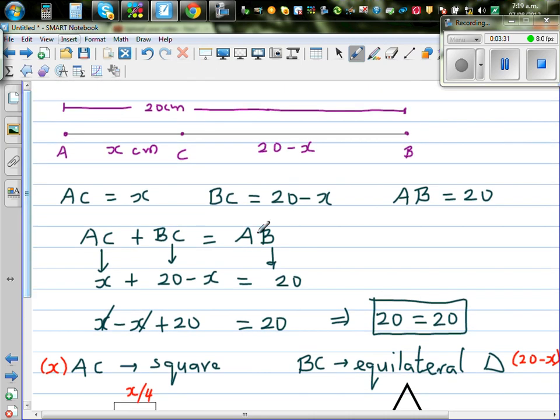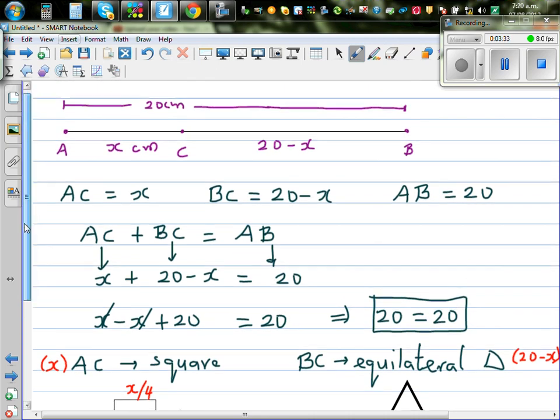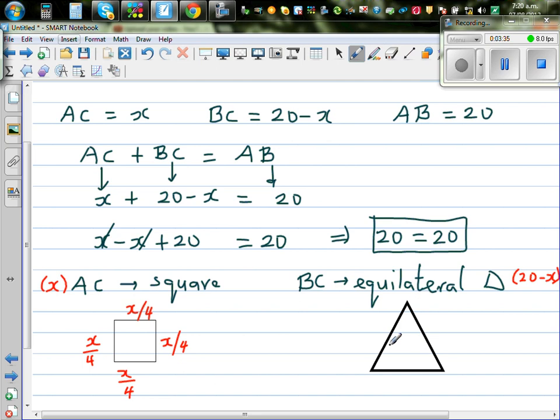And what would be the length of each of this equilateral triangle? So all these sides are equal. So well, that should be 20 minus x over what? Dividing 20 minus x into 3 equal parts. So let me use a different color. So this is 20 minus x divided by 3. So this would be also 20 minus x over 3. And this would also be 20 minus x over 3.